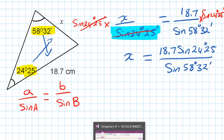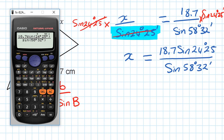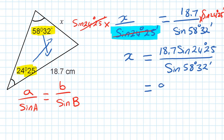Now I just type this into my calculator — exactly what is shown on the screen. The answer is x is equal to 9.0627 and so on.